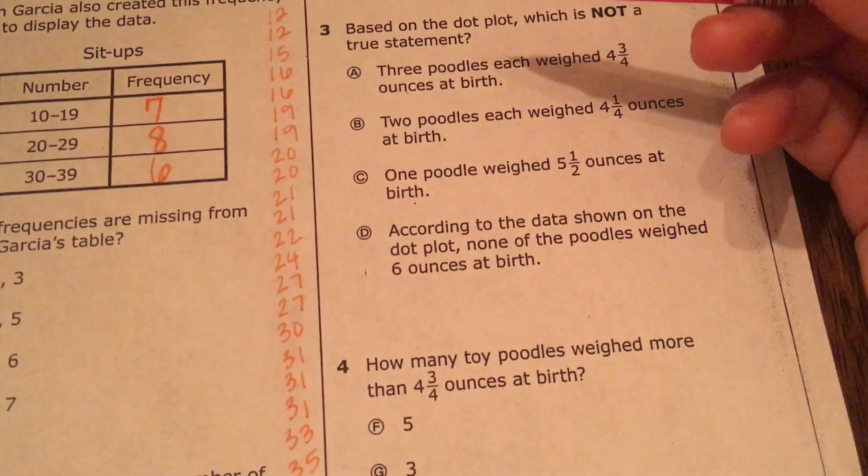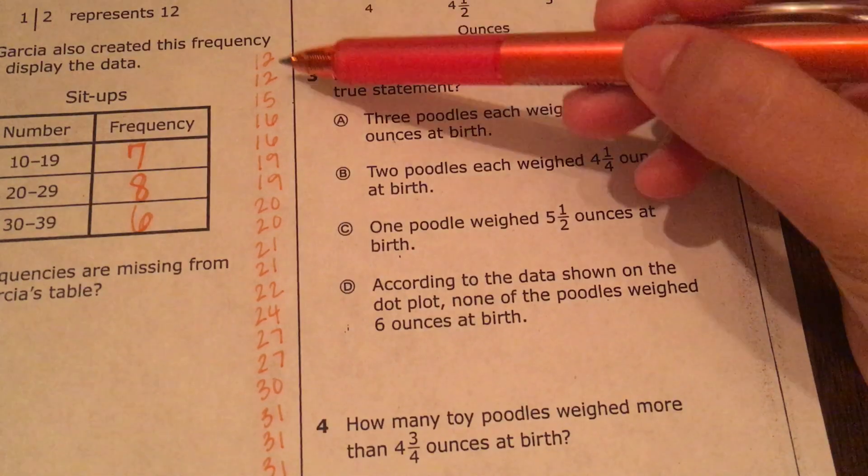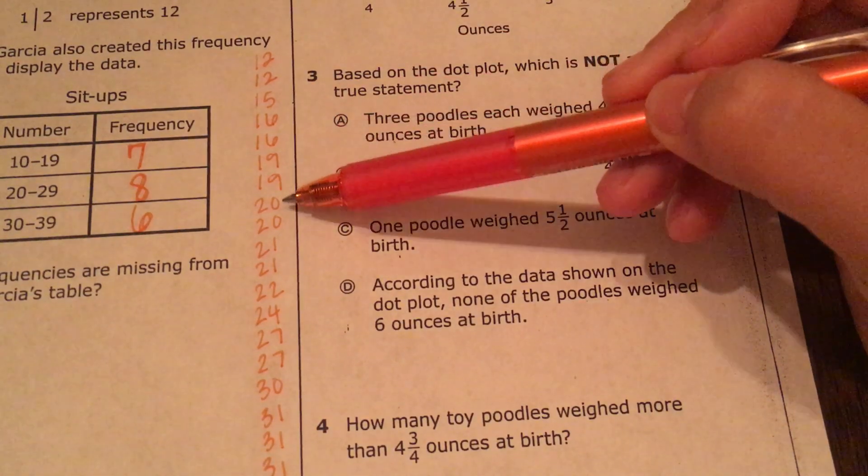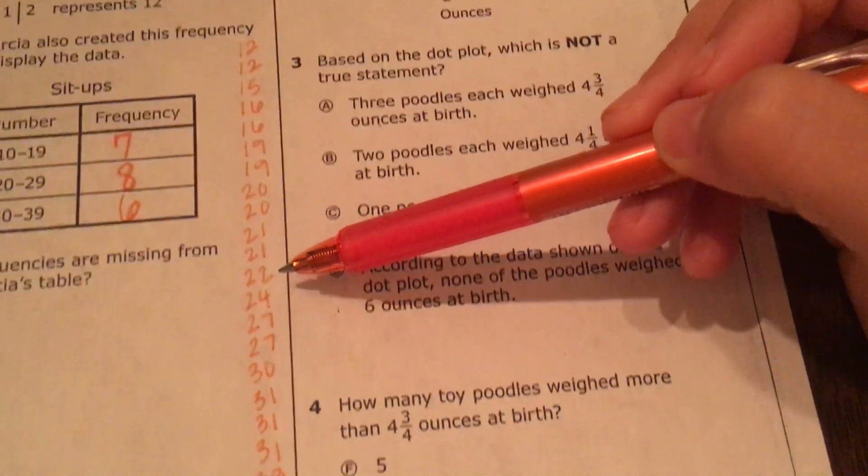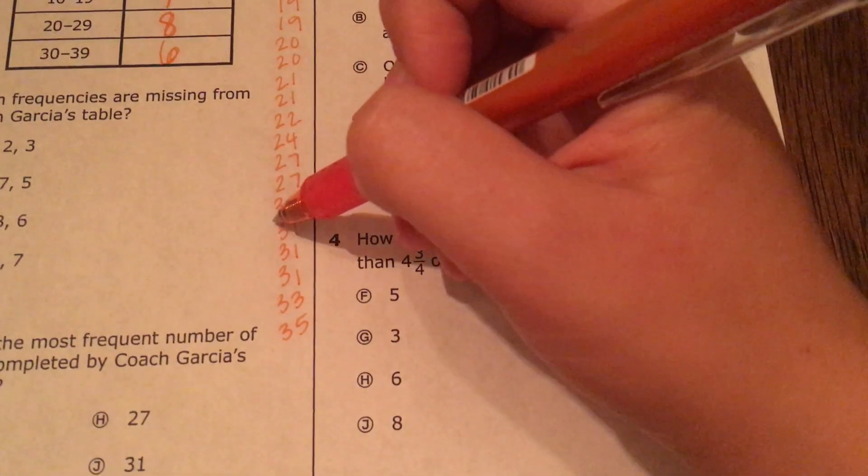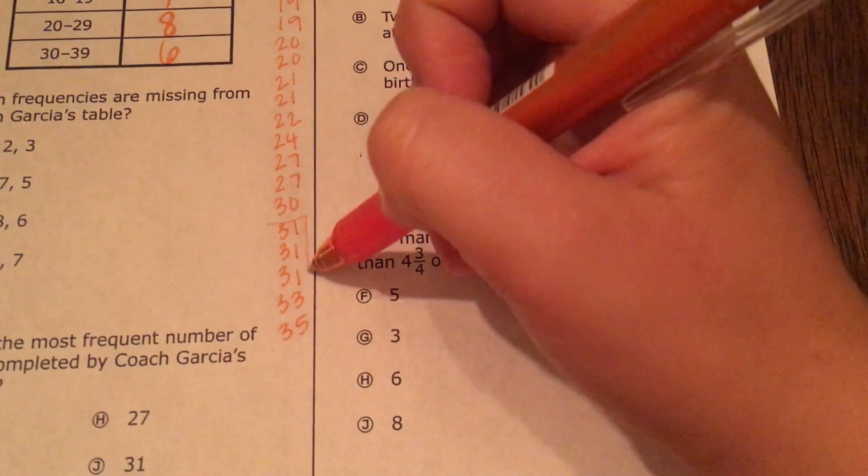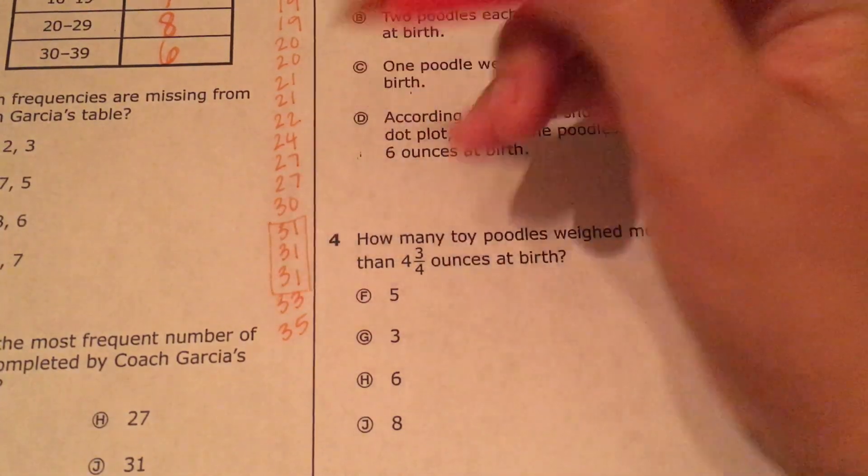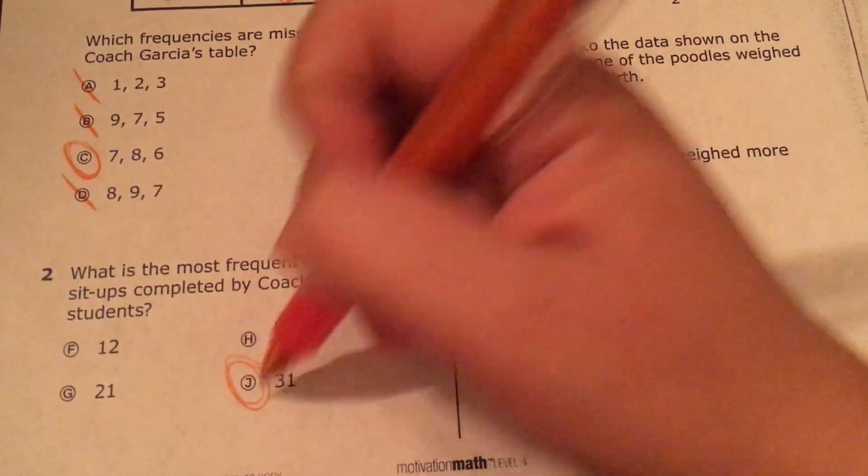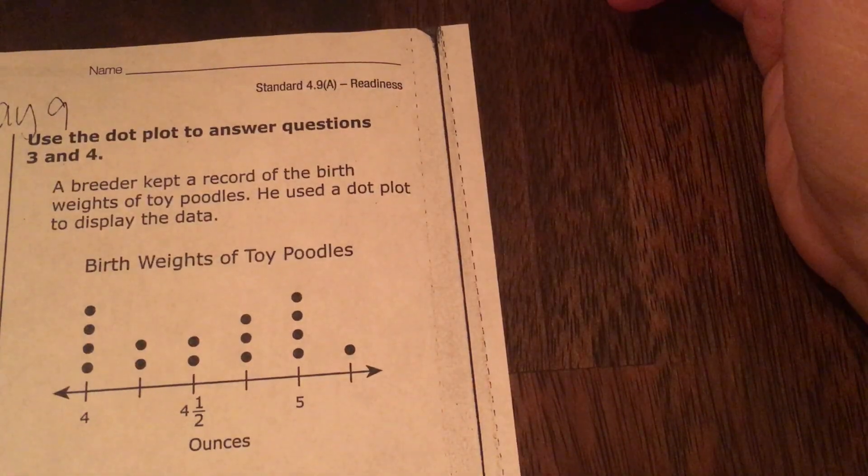So it looks like I have two 12s, two 16s, two 19s, two 20s, two 21s, two 27s, but then I have here three 31s, so that's the one that's most repeated. Okay. Number three.